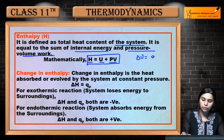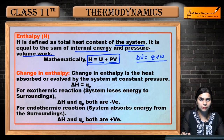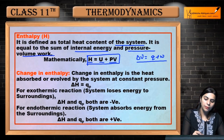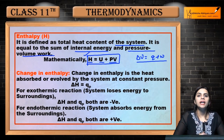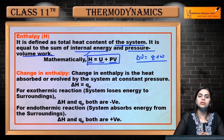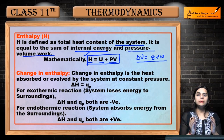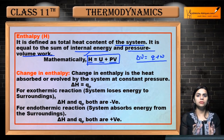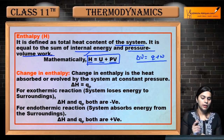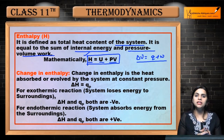Pehle humne dekha: ΔU = q + w, jise hum First Law of Thermodynamics bhi bolte hain. Ab jo next expression hai woh kya hai: H = U + PV, that is enthalpy equals the summation of internal energy plus pressure-volume work. Enthalpy kya hoti hai? Kisi bhi system mein jo humara heat content present hai, use hum enthalpy bolte hain.